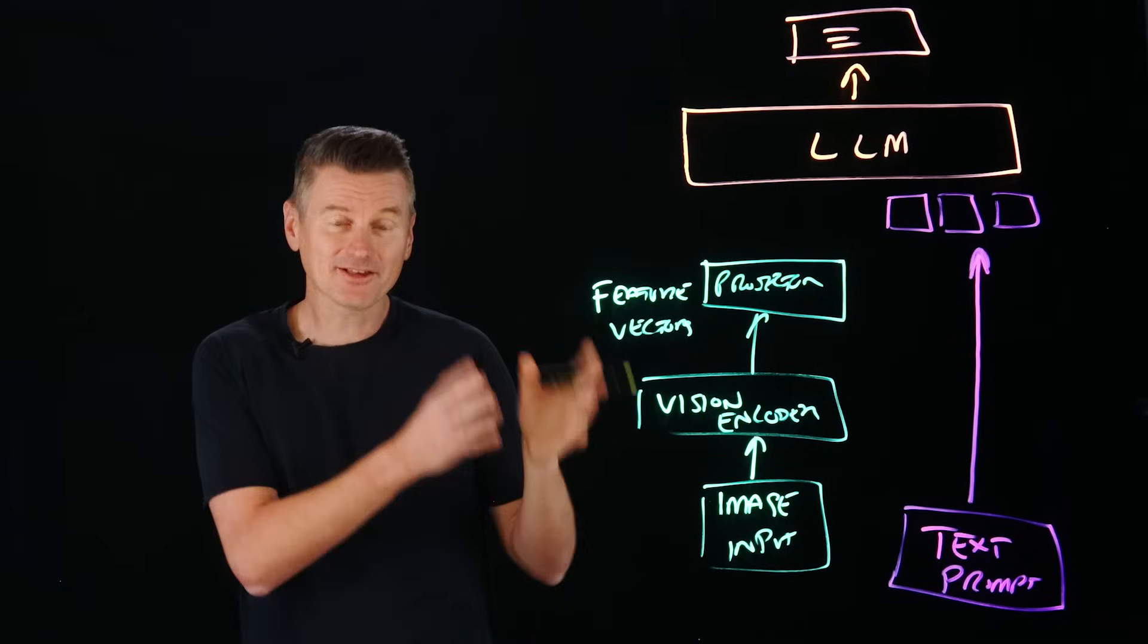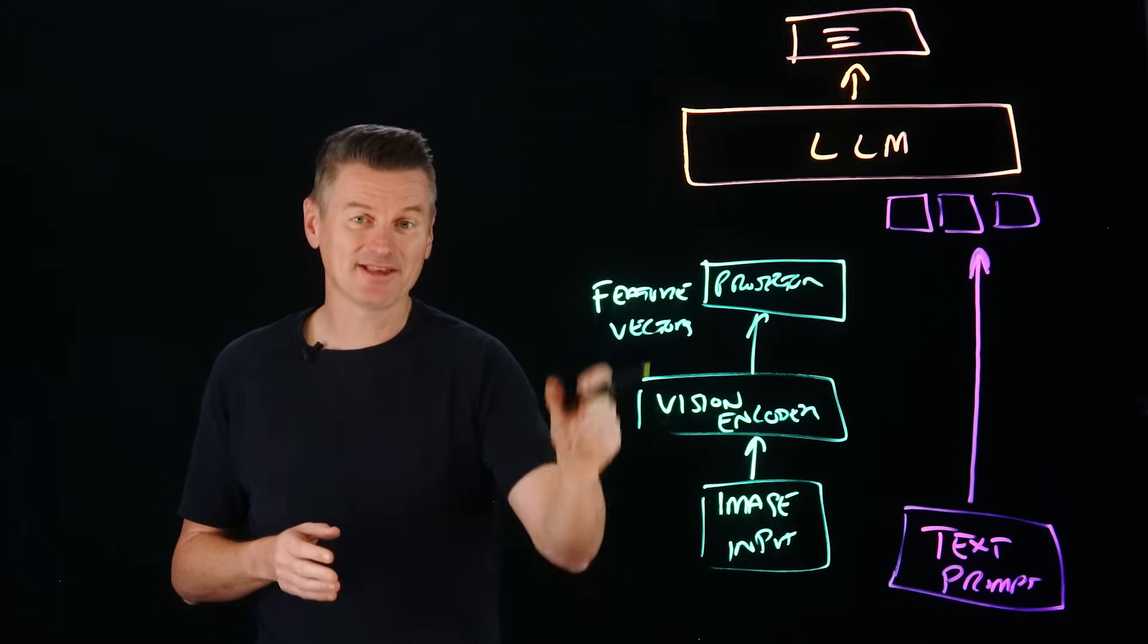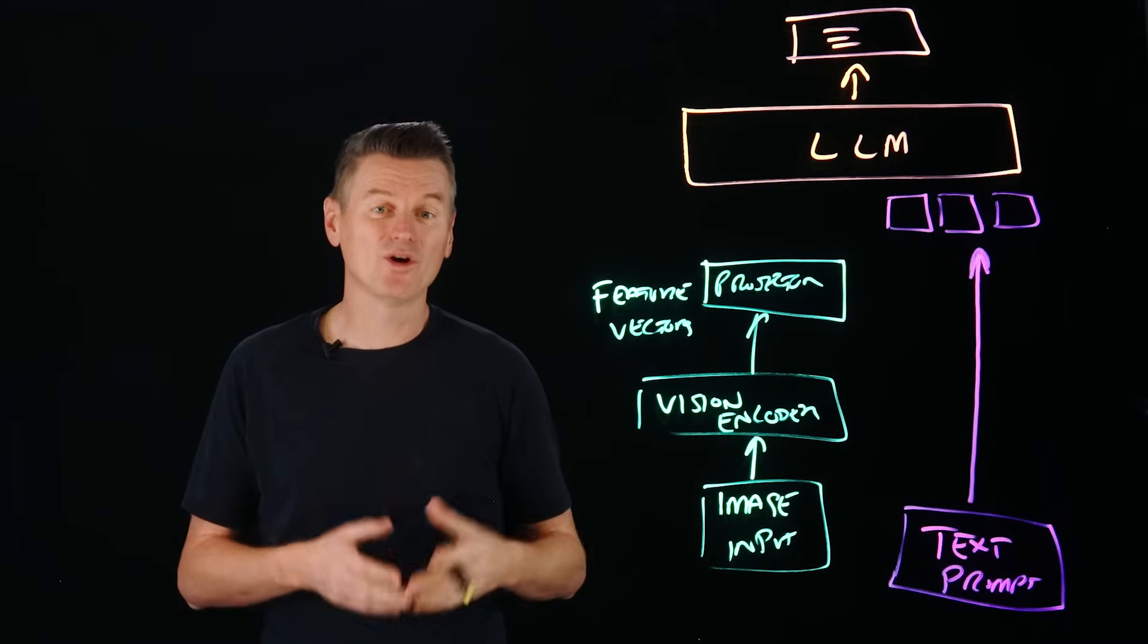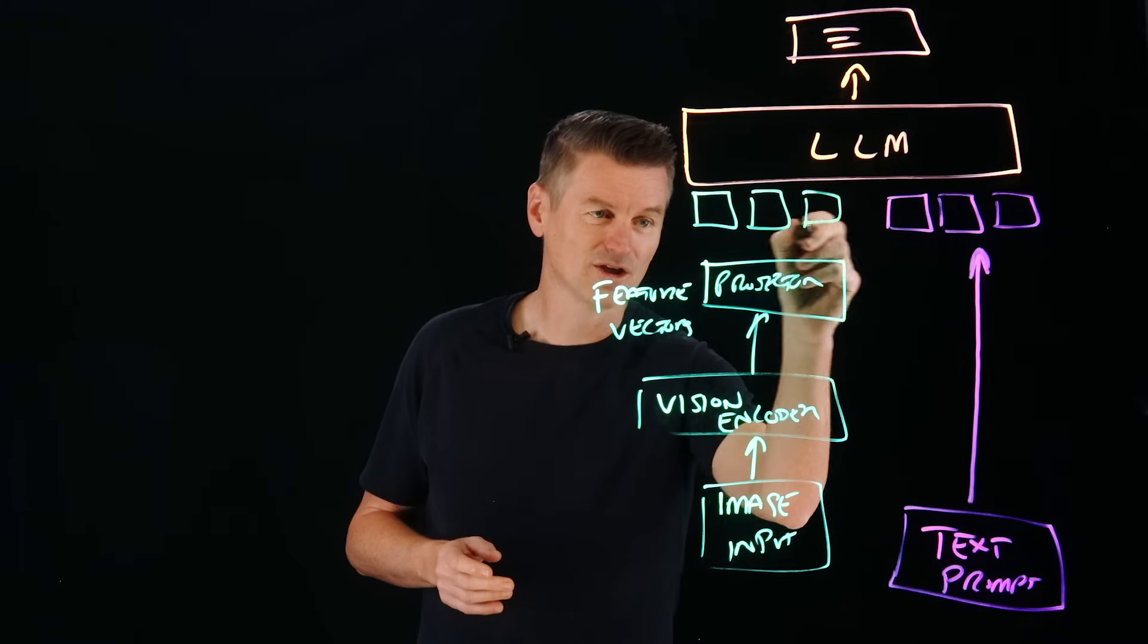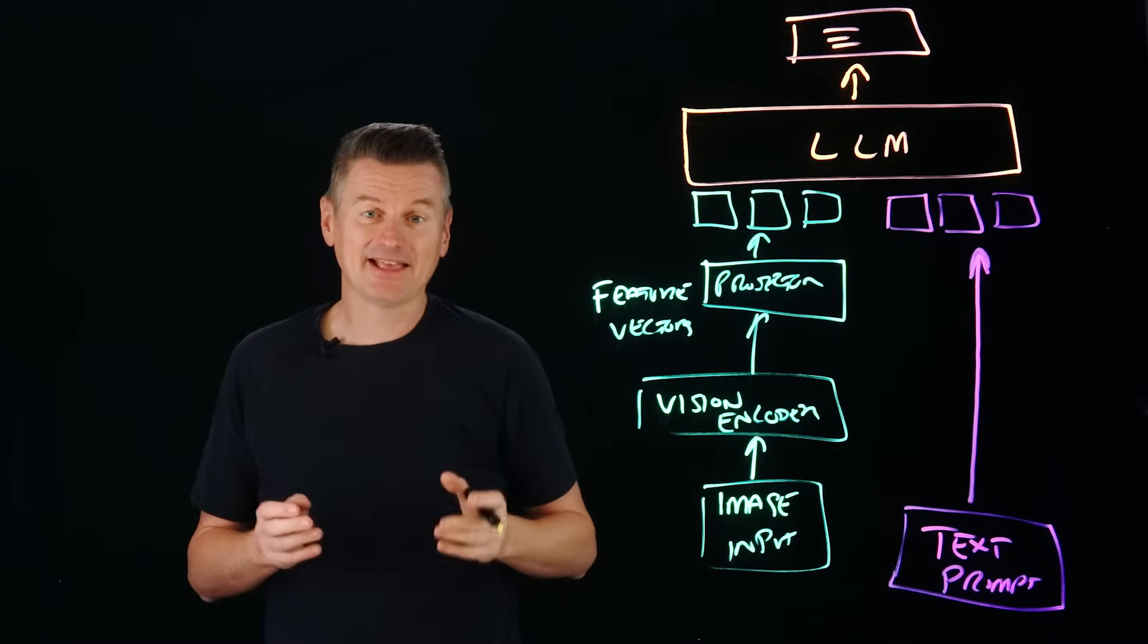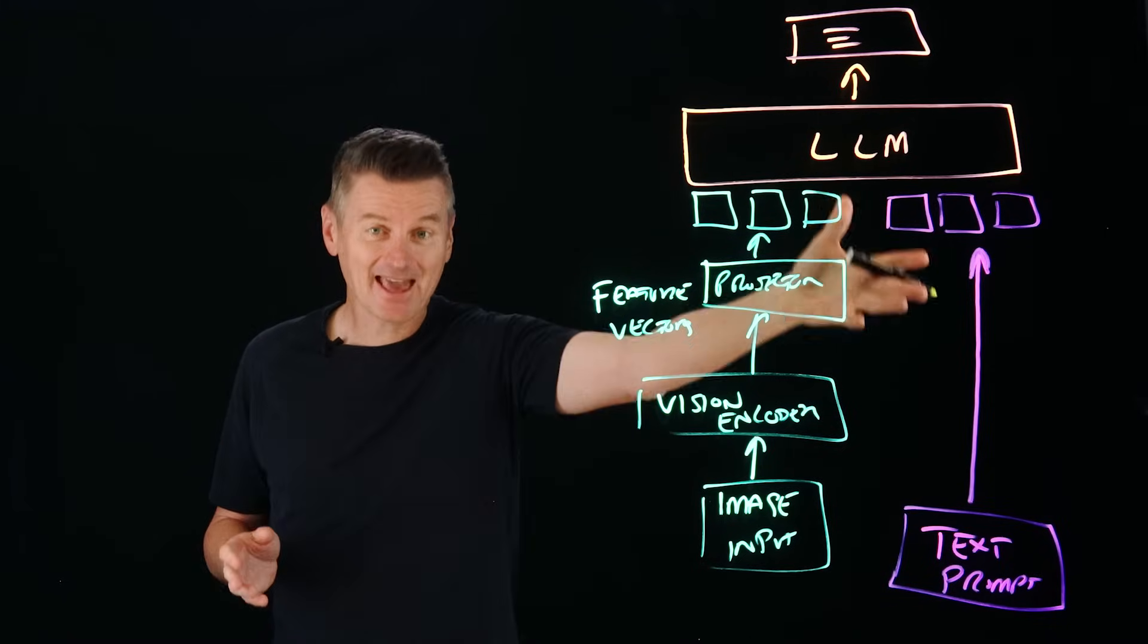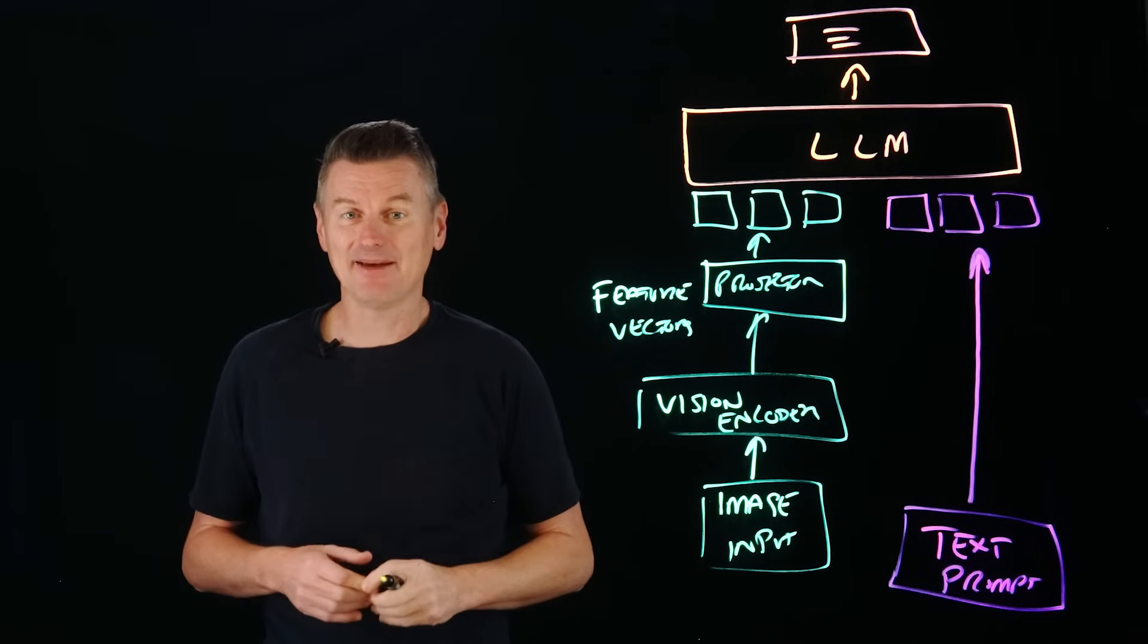Now this component maps the continuous image embeddings into a token based format. So this gives us image tokens and that aligns with the text representation used by the LLM.